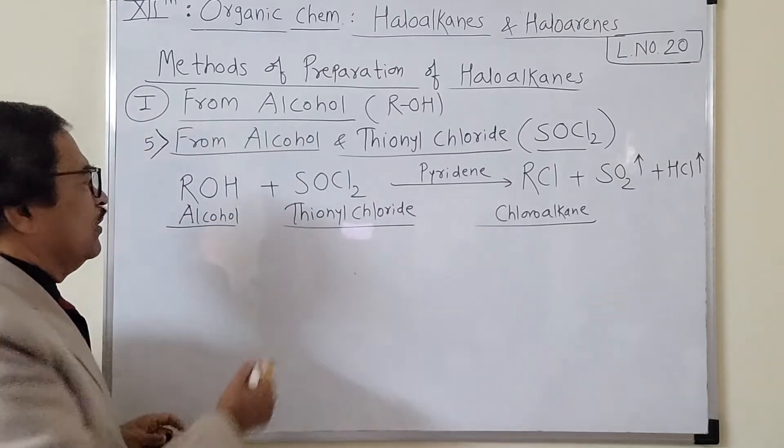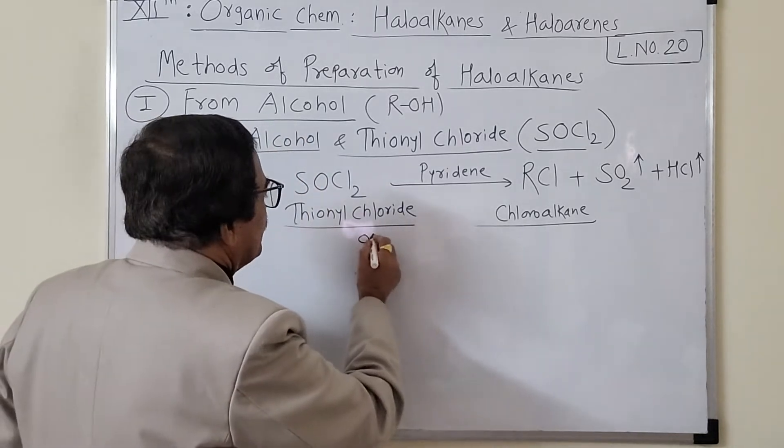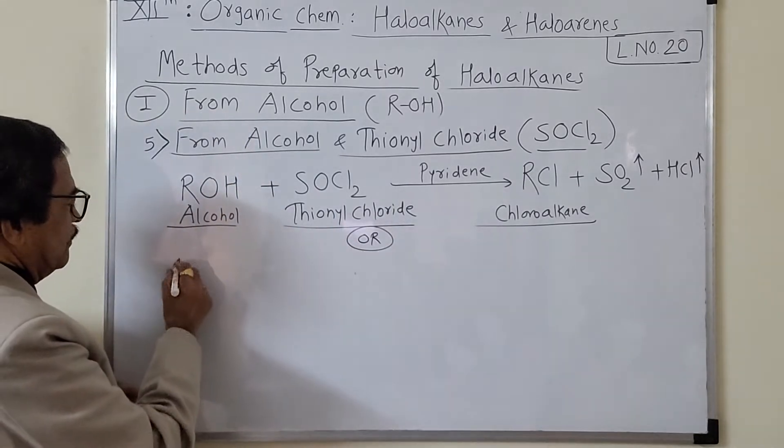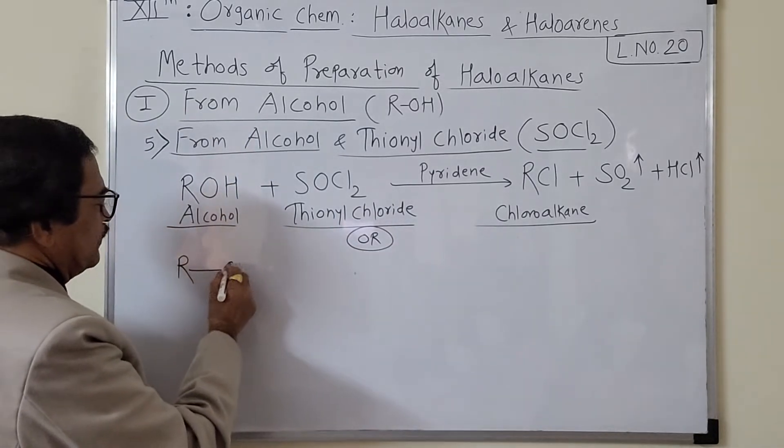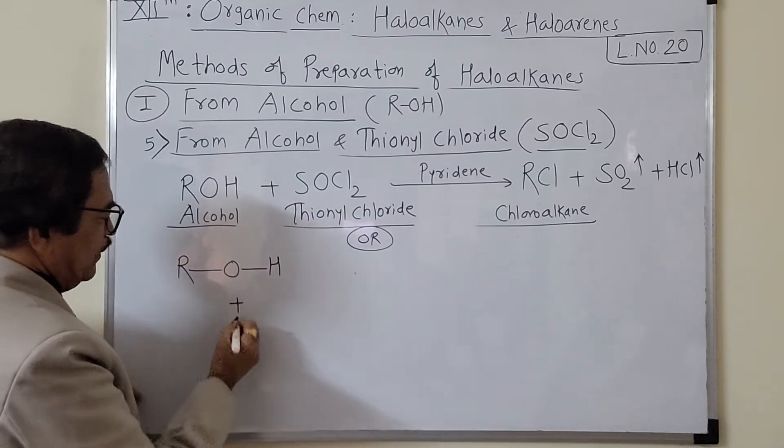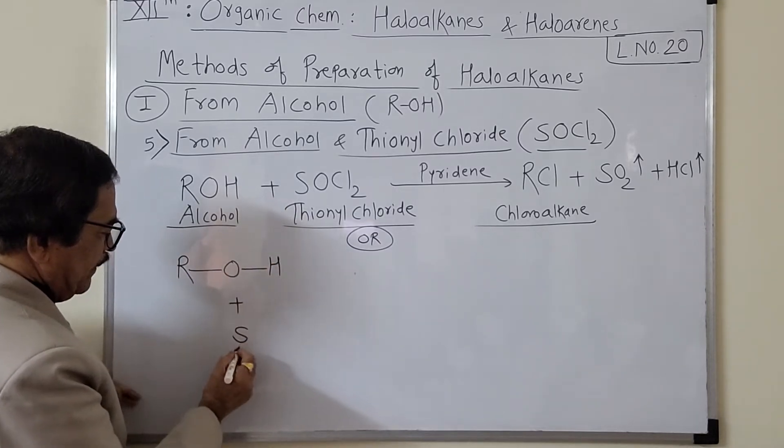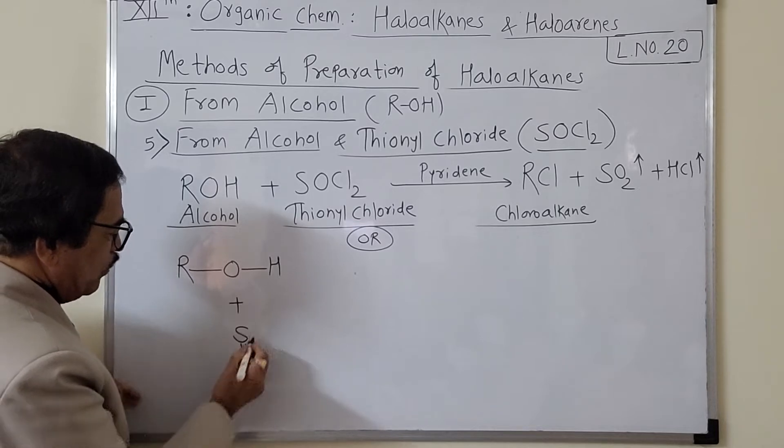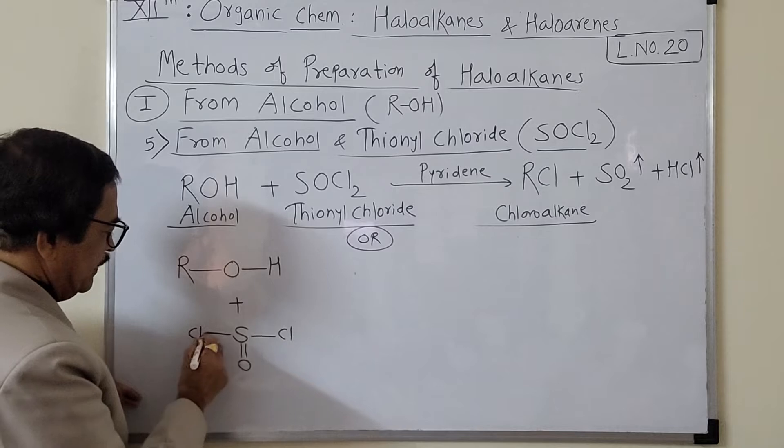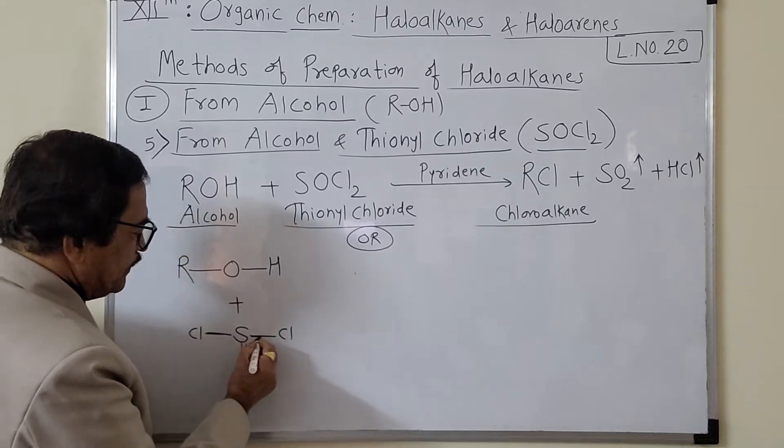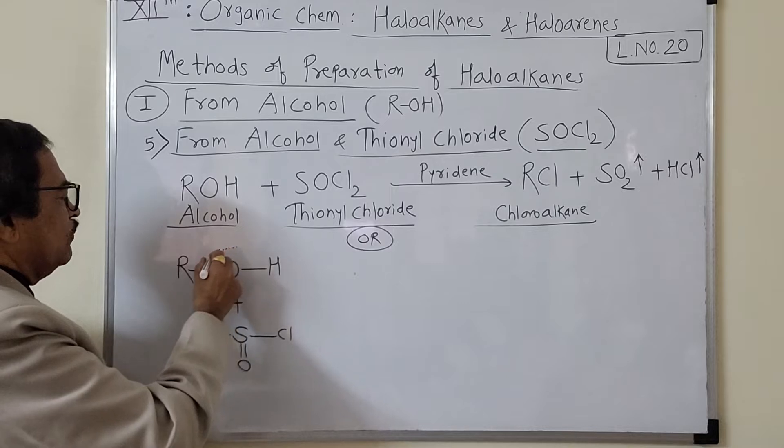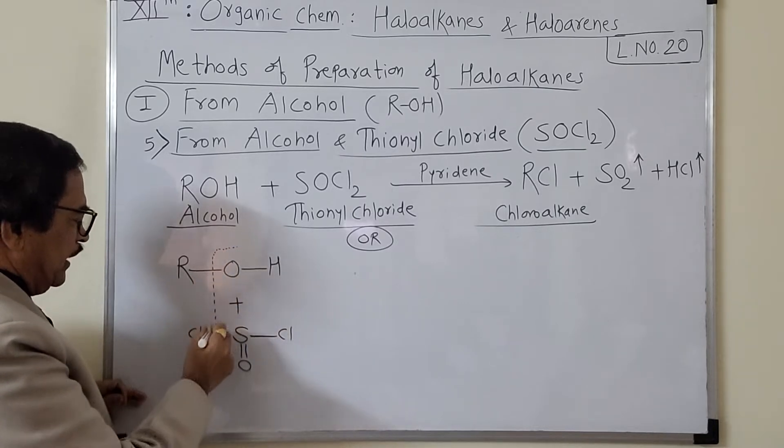This reaction ko hum aisa bhi likh sakte hain. Aapko yaad hoga humne likha tha phosphorus pentachloride ka reaction. In the same way I can write like this, jo understanding ke liye easy jaata hai: S double bond O, Cl, Cl - this is nothing but thionyl chloride.